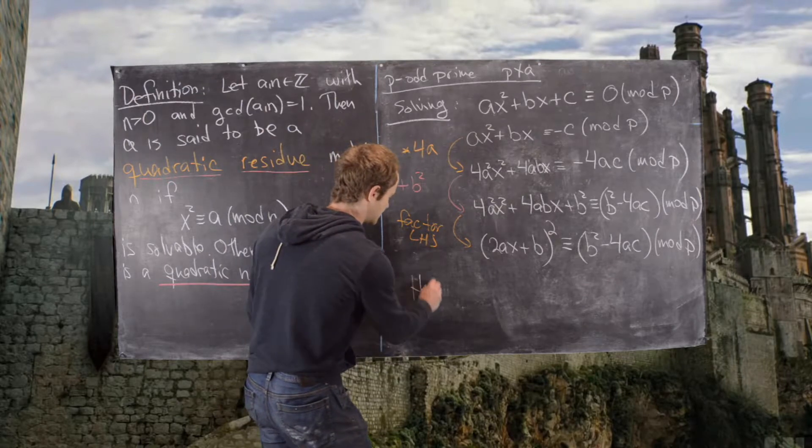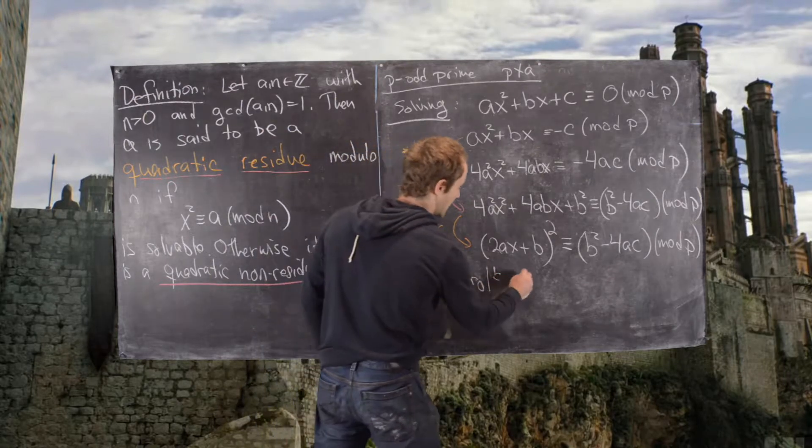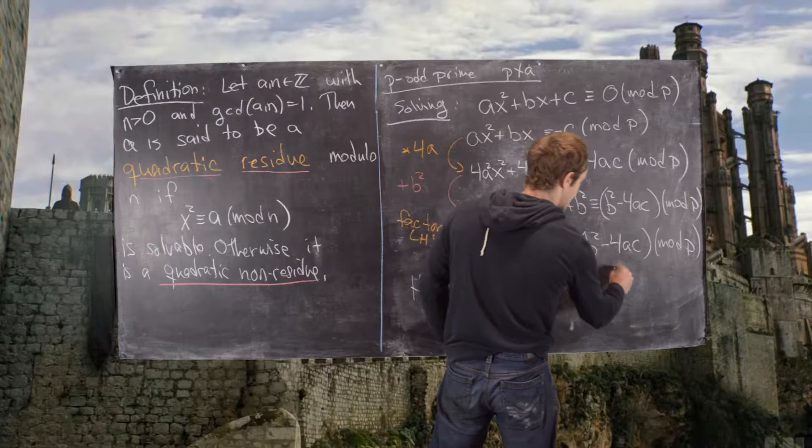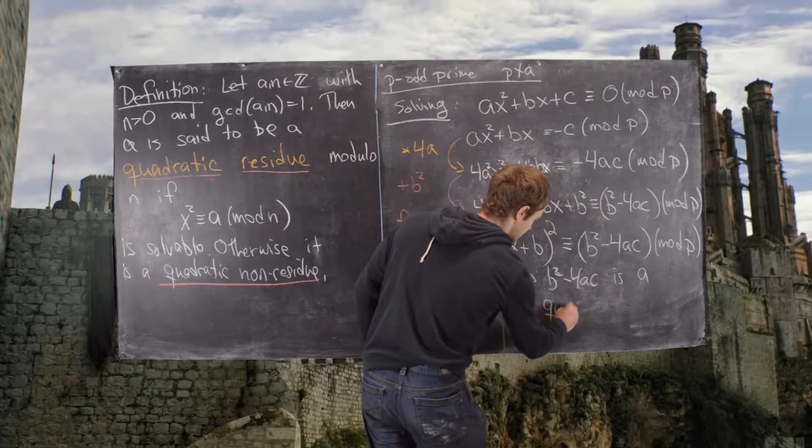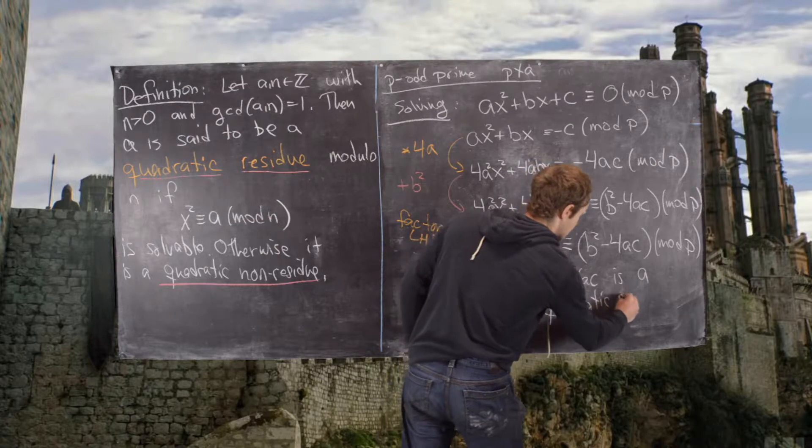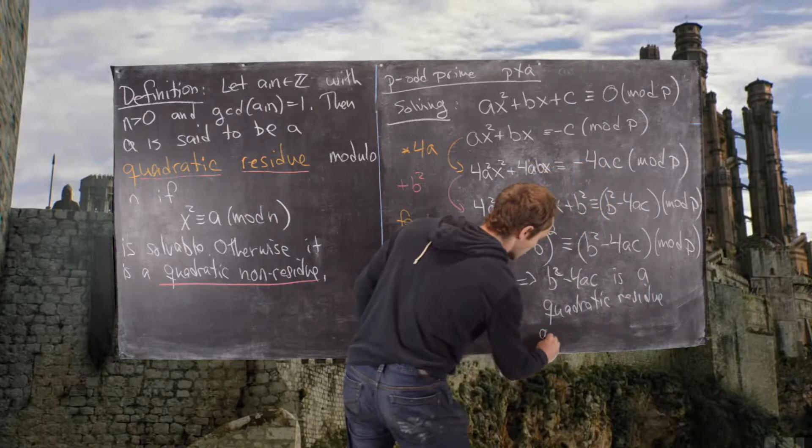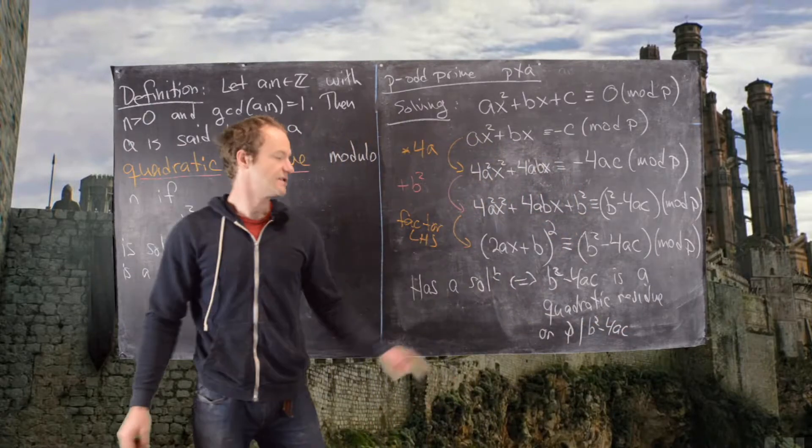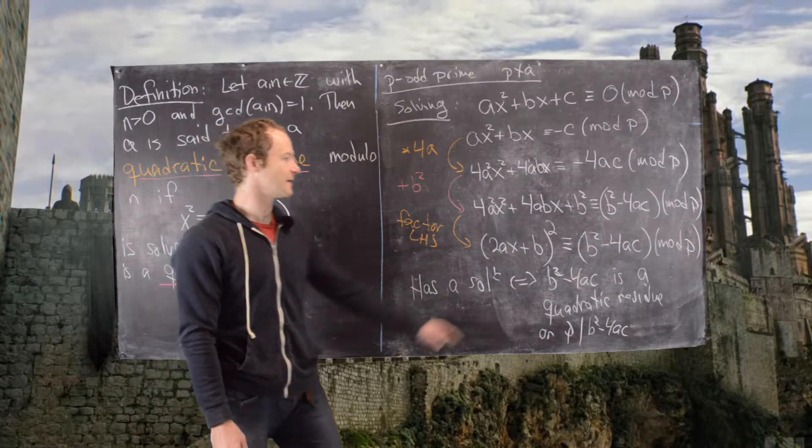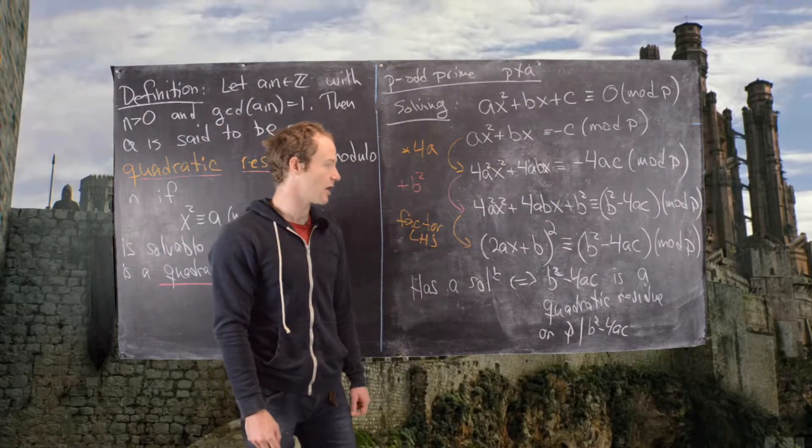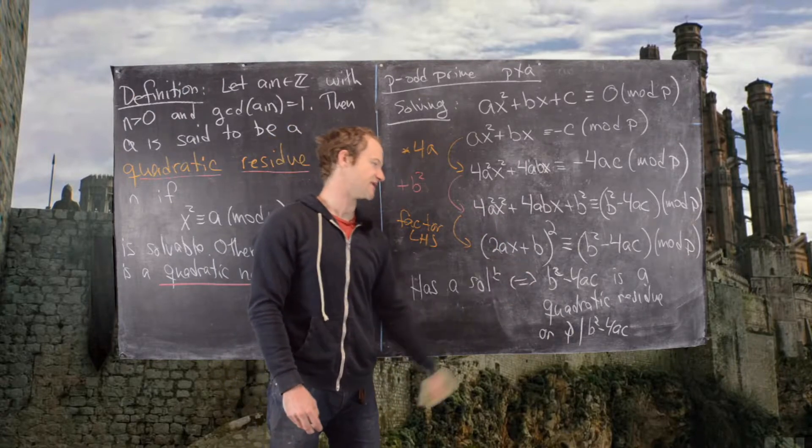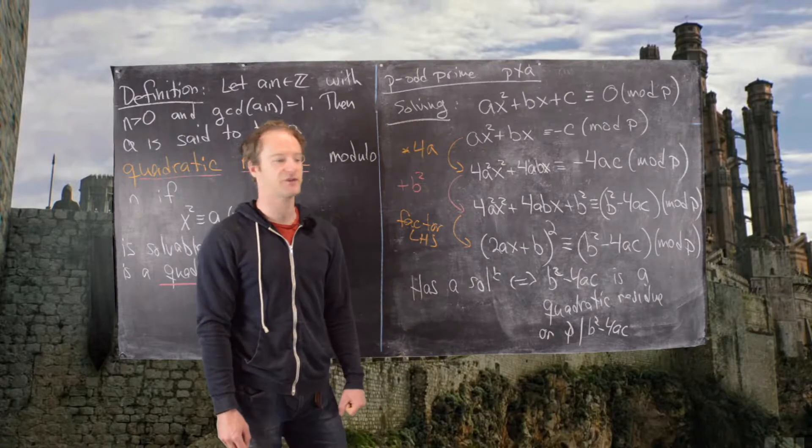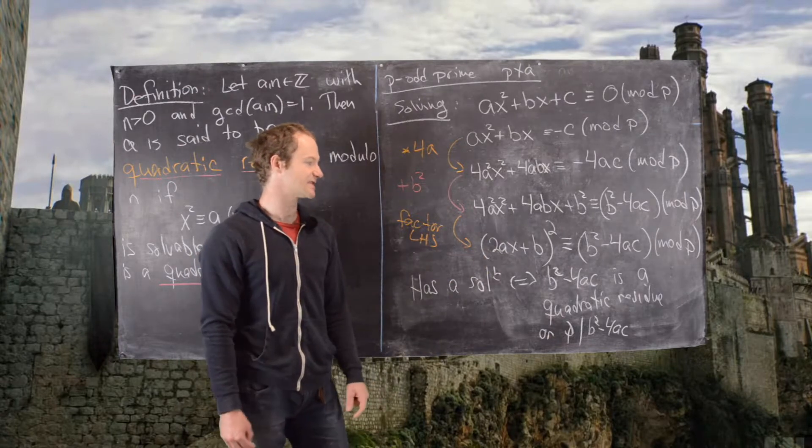So this has a solution if and only if b squared minus 4ac is a quadratic residue, or p divides b squared minus 4ac. So if p divides b squared minus 4ac, then obviously the right-hand side of this is 0, and that gives you a single solution when this is 0. And if it's a quadratic residue, then by a previous proposition, we know that this will have two solutions.